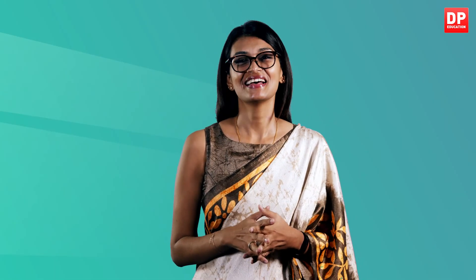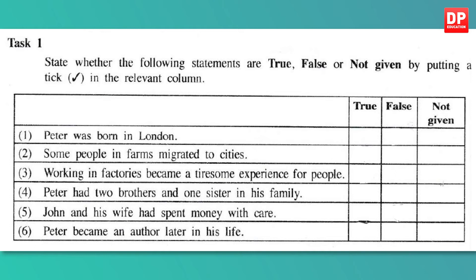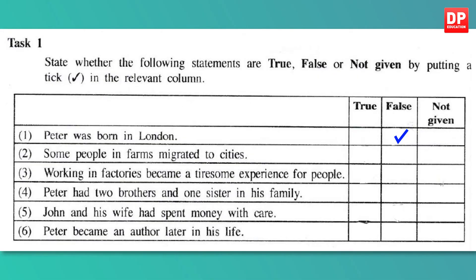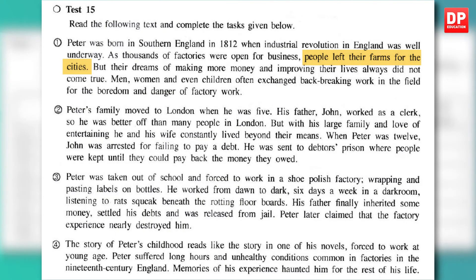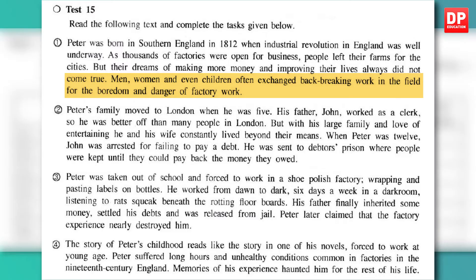This passage has two tasks. Task one: indicate whether the sentences given are true, false, or not given. You will get three marks — half a mark per question. Statement one: Peter was born in London — this is FALSE, because we are told he was born in southern England. Statement two: some people in the farms migrated to cities — this is TRUE, we are told people left their farms for the cities. Statement three: working in factories became a tiresome experience for people — this is TRUE, because men, women, and children often exchanged back-breaking work, meaning tiring and physically demanding work.